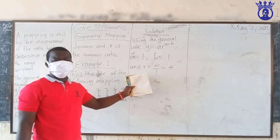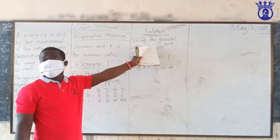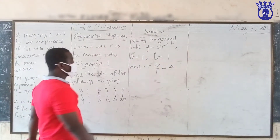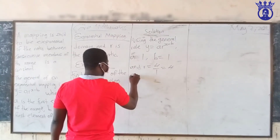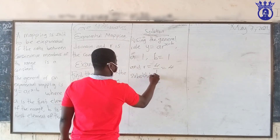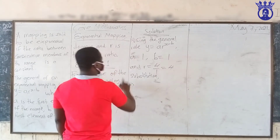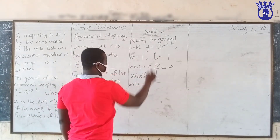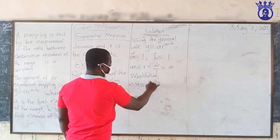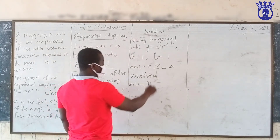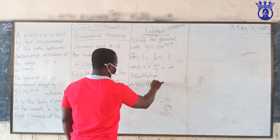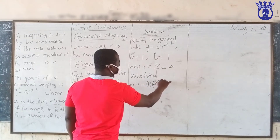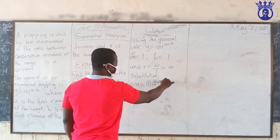The next thing is to substitute what we have gotten into the general formula to generate the rule. A is one, R is four raised to the power (x minus B), which is (x minus one). One times this gives us Y equals four raised to the power (x minus one).